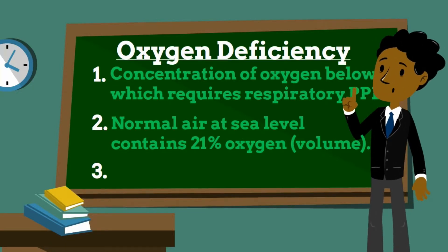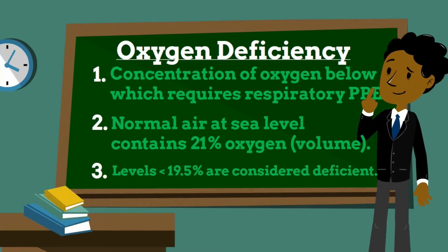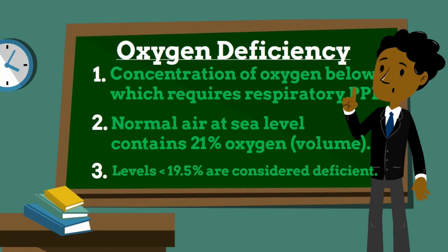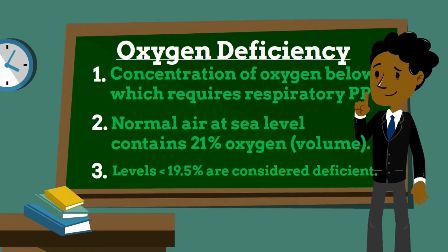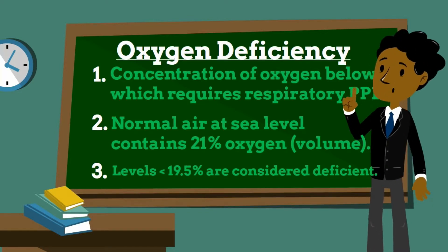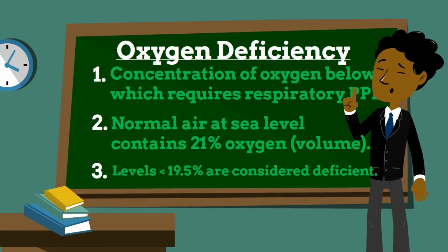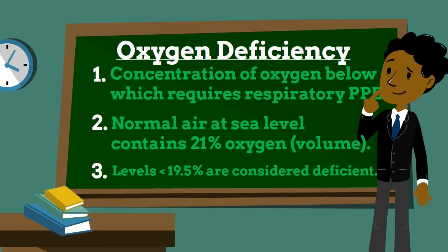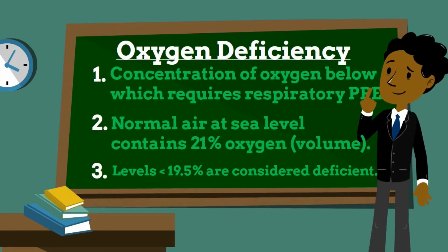Although the main physiological effects of oxygen deprivation become apparent at 16% oxygen, air with 19.5% or less oxygen is considered the level at which personal protection is required, in order to account for individual and measurement errors.